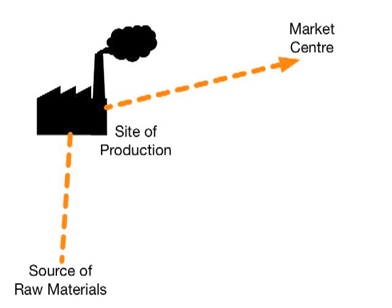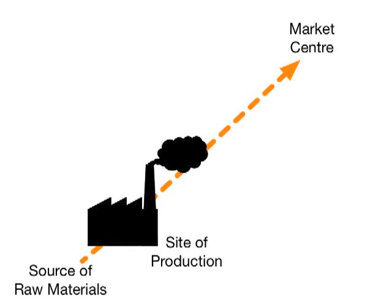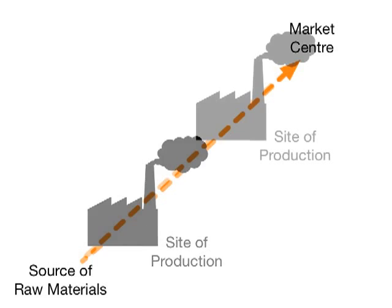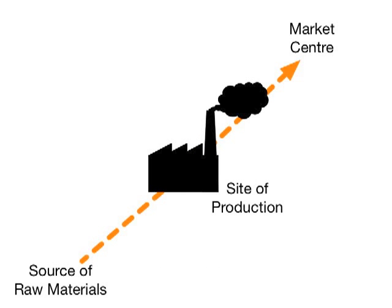Here's the problem. Suppose we got one raw material and we want to produce that into something we can sell in the market. But we know there are transportation costs involved. So where would we put the factory? Near the source of raw materials? At the market center? Or somewhere in between?